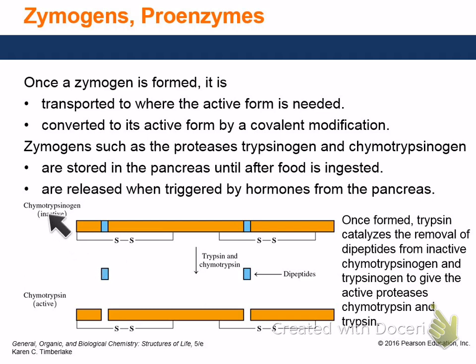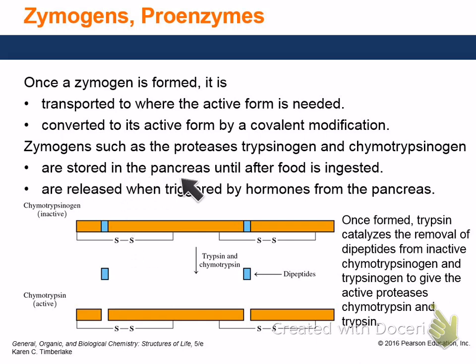An example: trypsin and chymotrypsin — or chymotrypsinogen and trypsinogen — are digestive enzymes that help break down amino acids. They're stored in the pancreas until you eat food, then released. Hormones from the pancreas trigger those segments to be cut out, activating the enzymes so you can digest your food. It controls when digestion happens by cleaving those sections out.